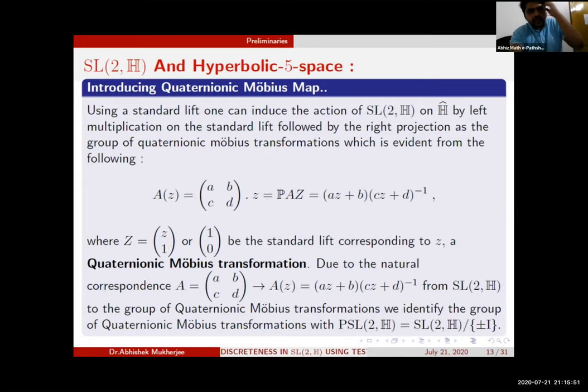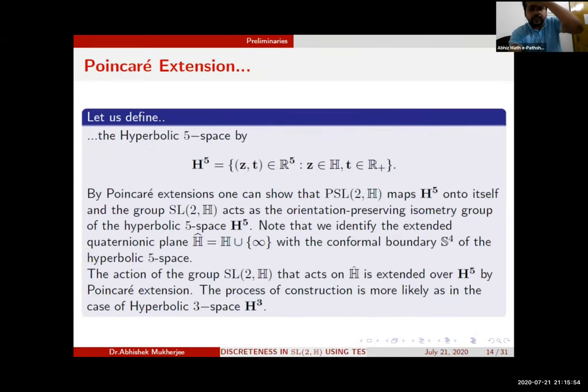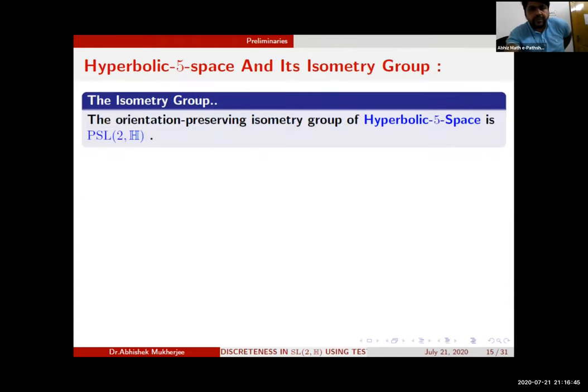This introduces the quaternionic Möbius transformation. Due to the natural correspondence, we identify the group of quaternionic Möbius transformations with PSL(2,H). Now let us define the hyperbolic 5-space by this definition: H⁵ is the set of all points (z,t) in R⁵ such that the last coordinate is greater than zero. By Poincaré extensions, PSL(2,H) maps H⁵ onto itself. The group SL(2,H) acts as an orientation-preserving isometric group of the hyperbolic 5-space H⁵.